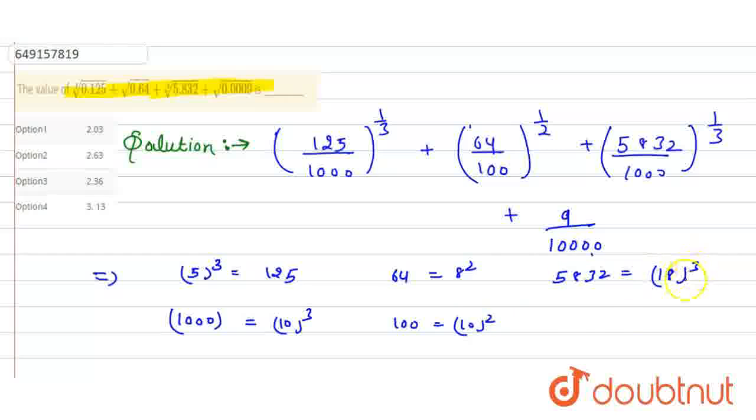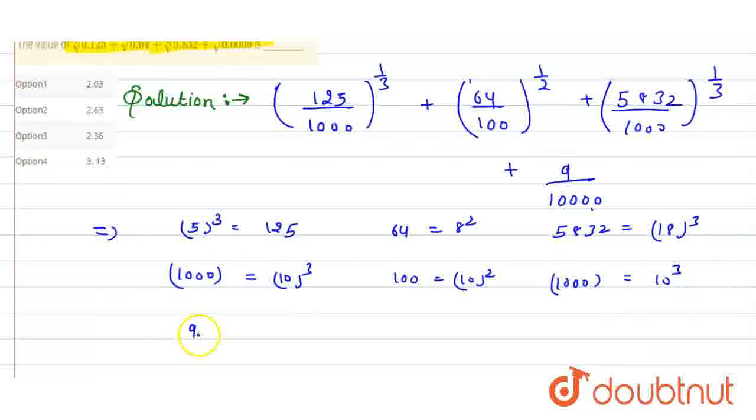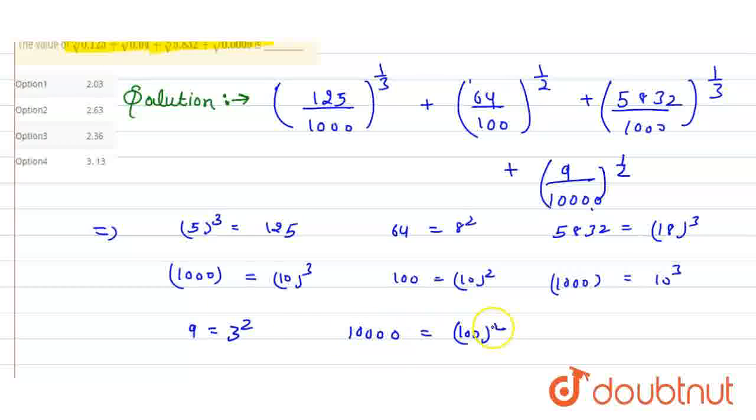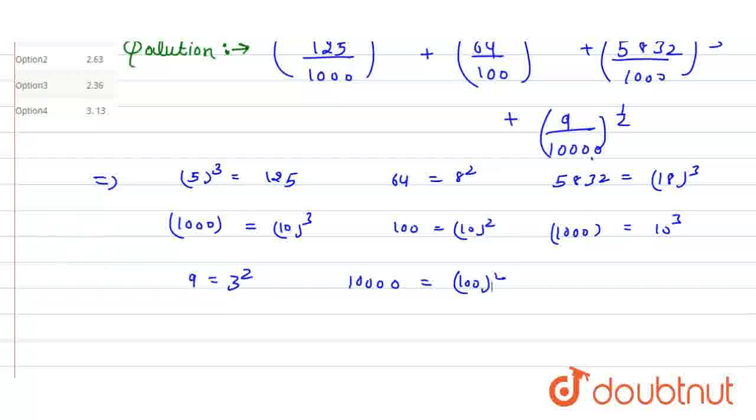So I can write that as 10 cube. And here I have 10000, so I can write that as 10 to the fourth. I can write 9 as 3 square, and 10000 as 100 square. So this is all the values we put together.